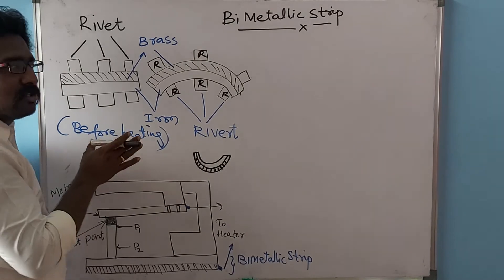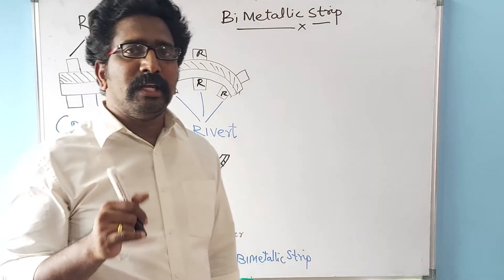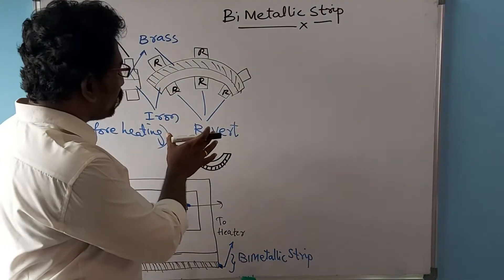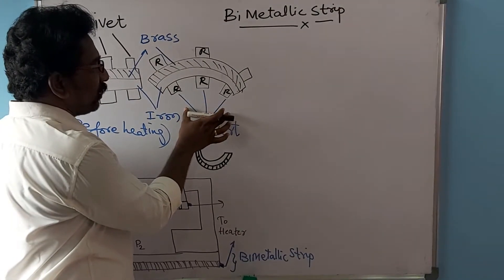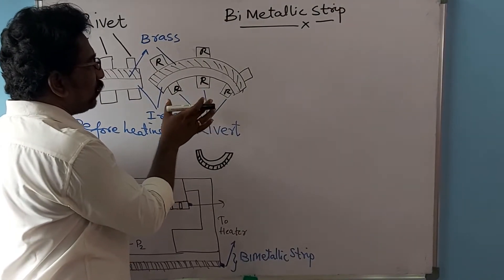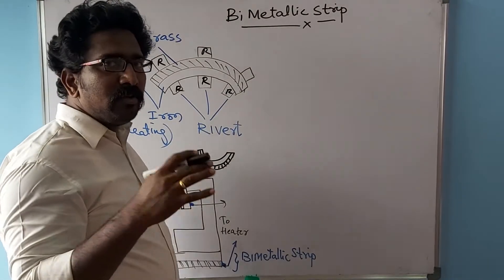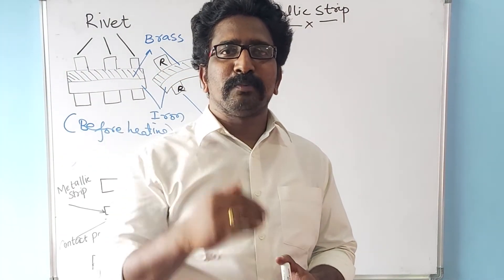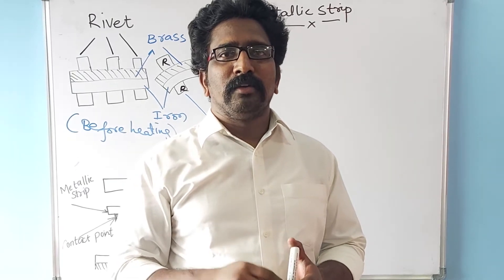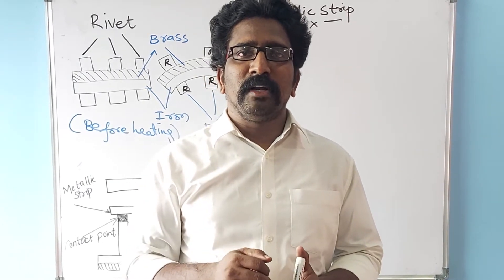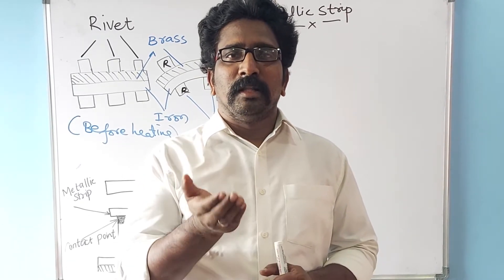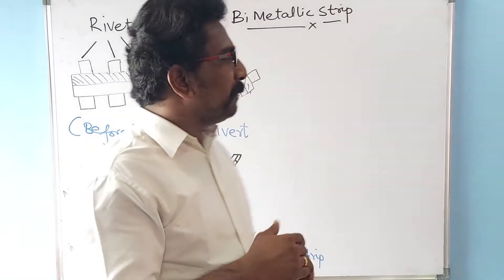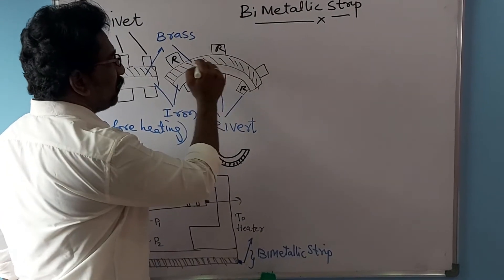Now let us see what happens if this bimetallic strip is subjected to heat energy or some thermal effects. If this has been subjected to some temperature, we know that brass has very good thermal expansion capability, so brass will expand more compared to iron. If brass is expanding more, then definitely the brass will be bending in the upward direction.